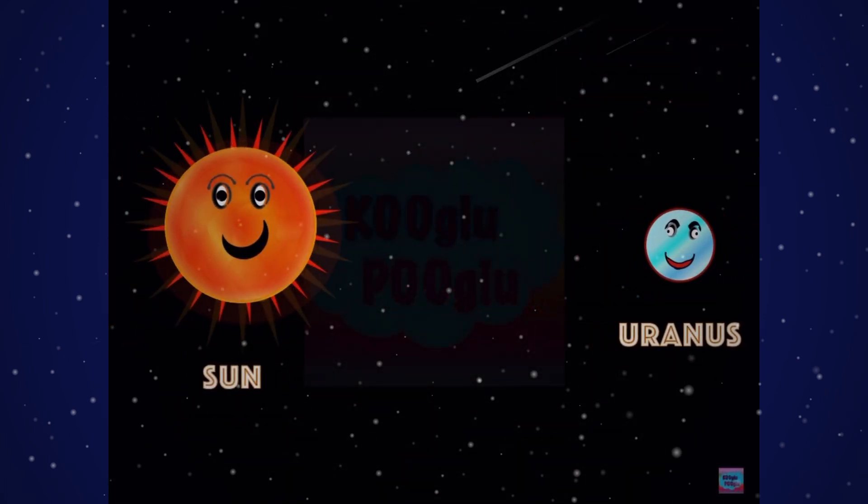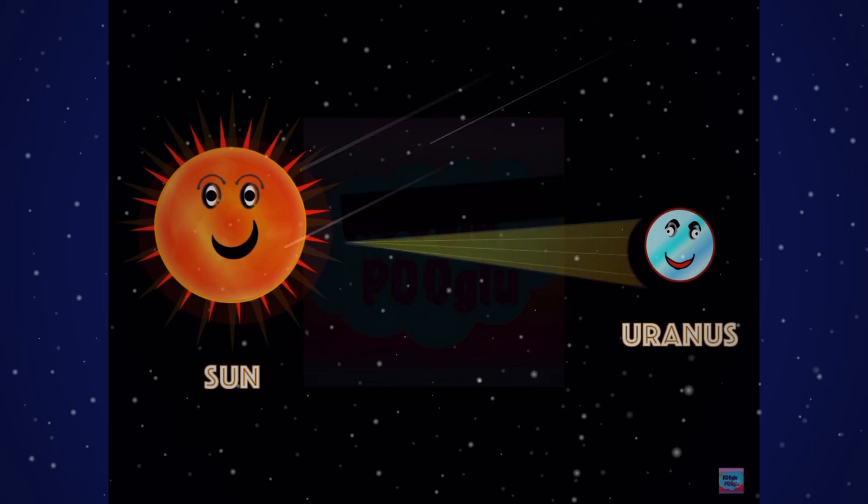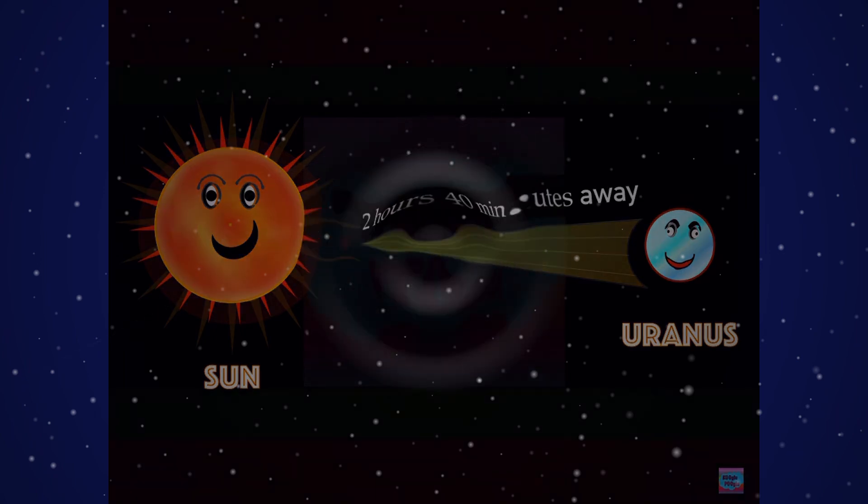How many light minutes does it take for sunlight to reach Uranus? It takes two hours and 40 minutes for sunlight to reach Uranus.